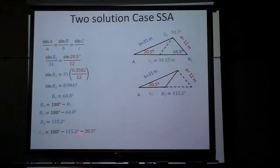And if B2 is 115.2, then angle A is 20.5, you can find C2 by subtracting those two numbers, which is 44.3.